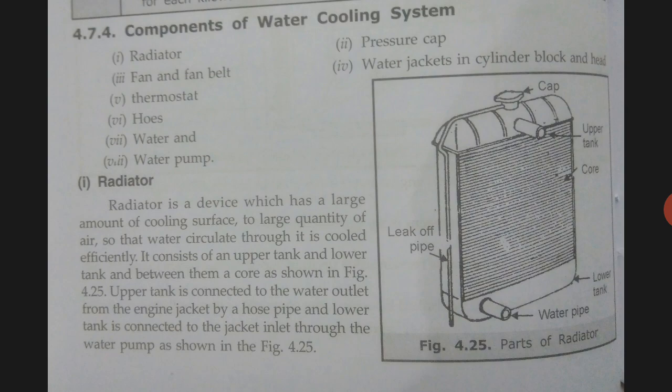The water pipe from the lower tank goes to the water jacket of the engine, and from the water jacket the water, after getting heated and taking away the heat of the engine, goes back to the upper tank. From the upper tank it travels down to the lower tank through the fine tubes due to gravity, and in this process the water gets cooled through the passing of cool air.